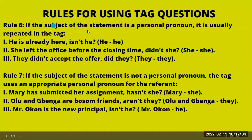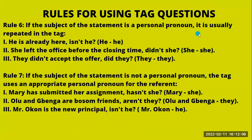Rule number six: if the subject of the statement is a personal pronoun, it is usually repeated in the tag. For example, the personal pronoun in example one is 'he' — 'He is already here, isn't he?' — we repeat 'he' in the tag. It would be wrong to say 'He is already here, isn't she?' or 'aren't they?' When you use a personal pronoun, you have to repeat it in the tag. Further examples: 'She left the office before the closing time, didn't she?' — and 'They didn't accept the offer, did they?' — 'they' is in the statement and 'they' is repeated in the tag.